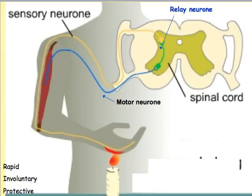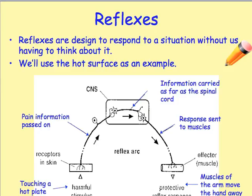The reflex arc is often drawn like this. Receptors in the skin — or your eye or some sense organ — sense a stimulus. Information passes along the sensory neuron up towards the relay neuron in the central nervous system. That impulse is then sent down the motor neuron to the effector, in this case the muscle, which moves the arm or hand away to protect the body. The effector could also be a gland.